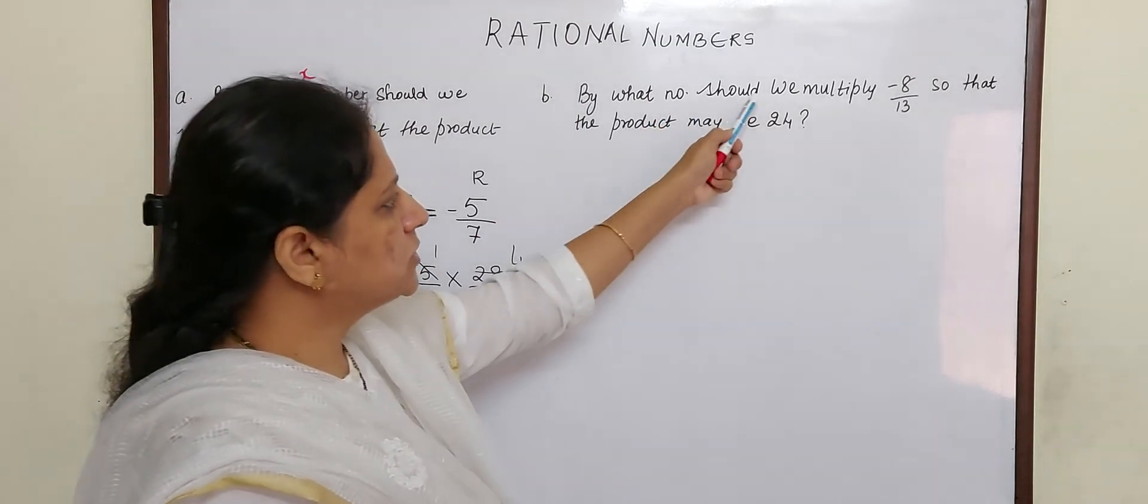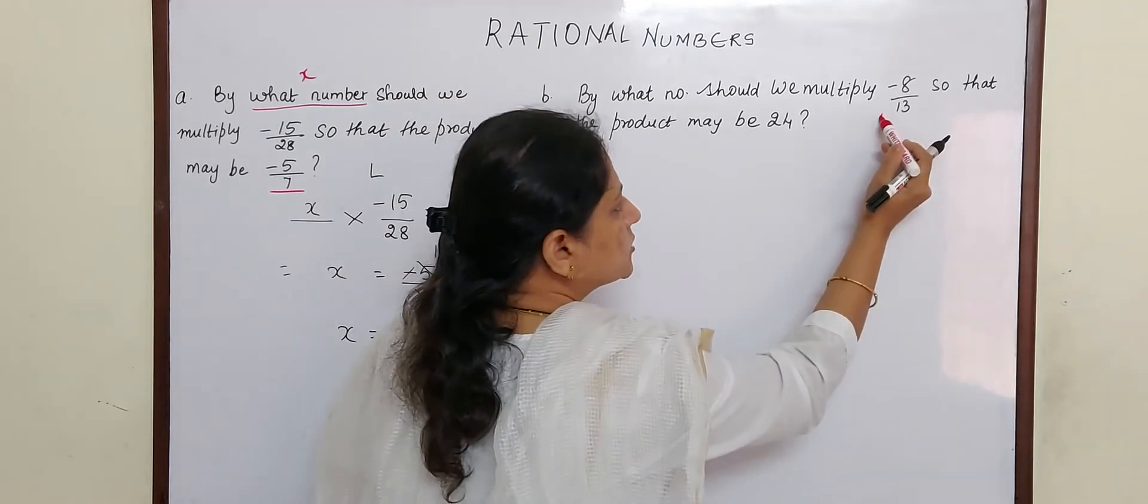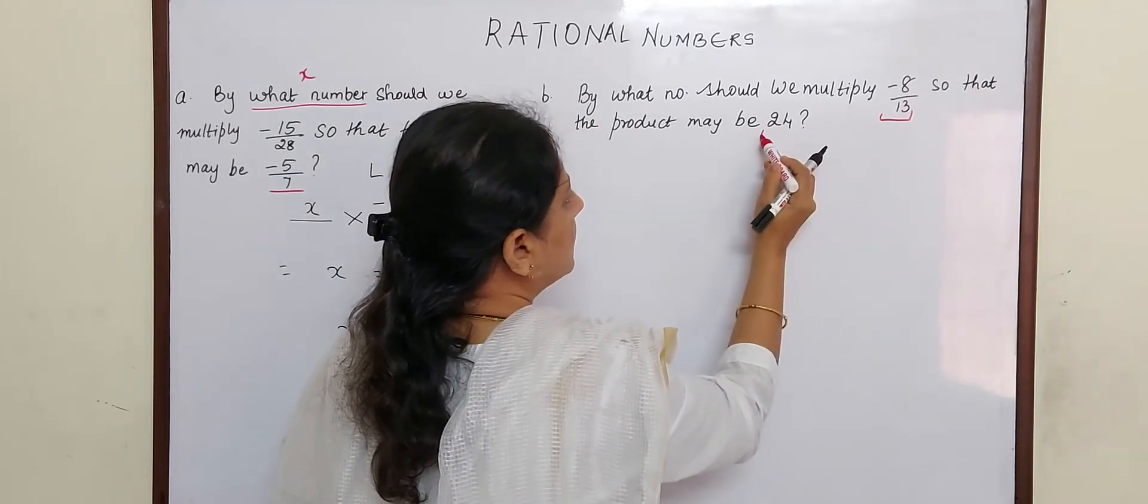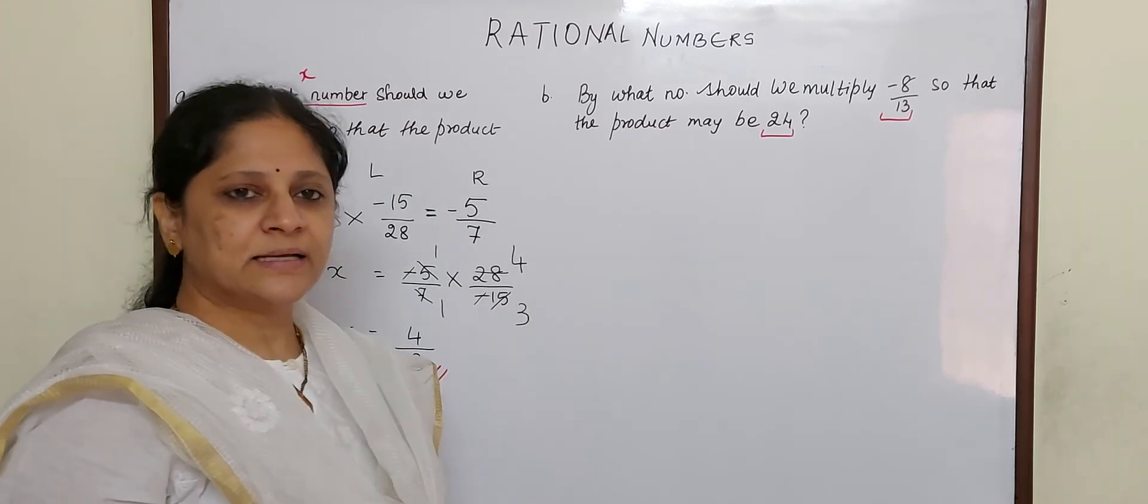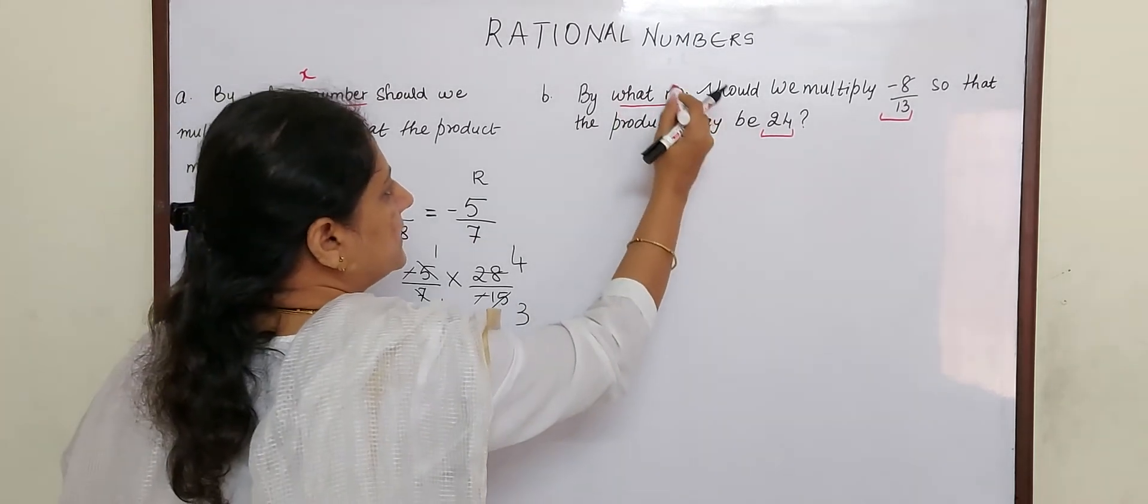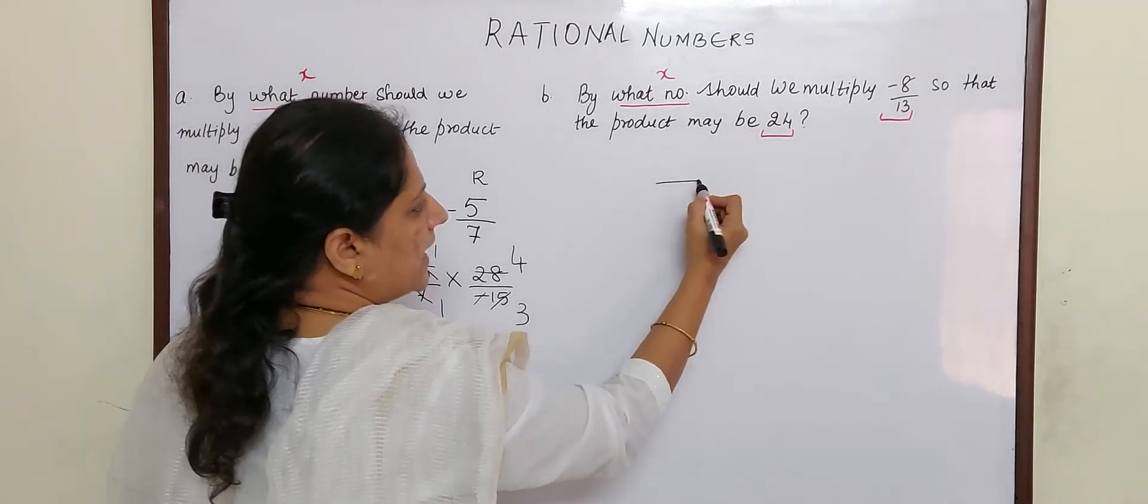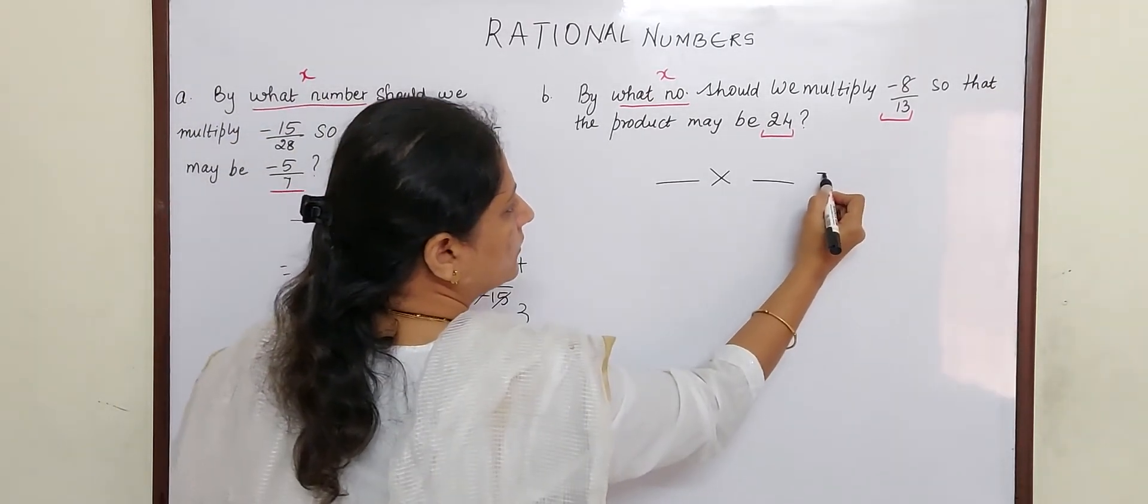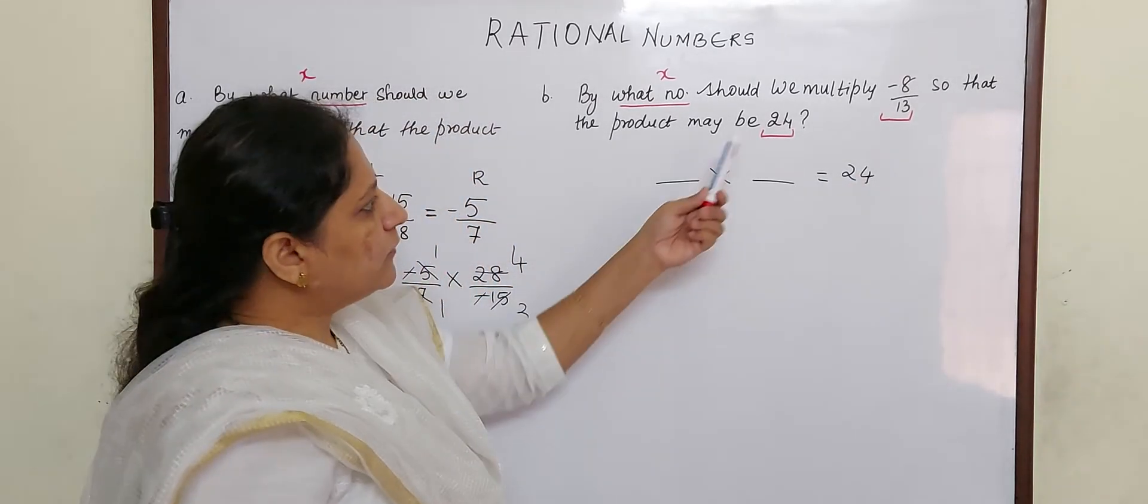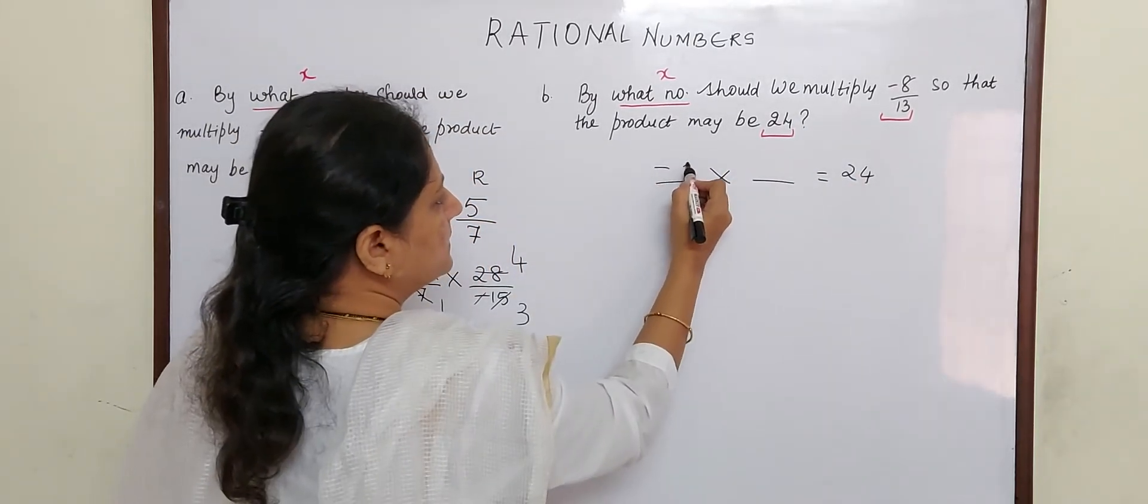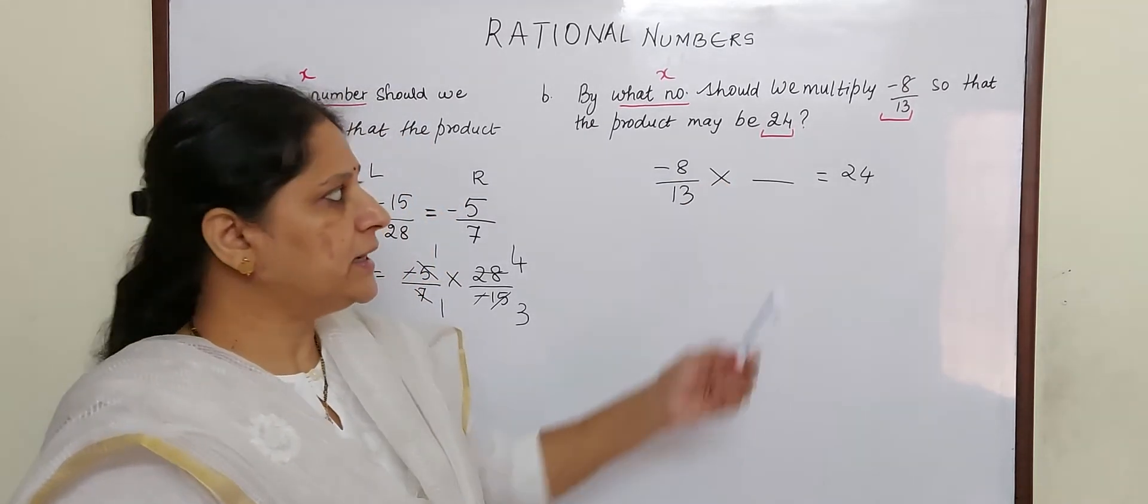By what number should we multiply -8/13 so that the product may be 24? So what will we take the number as? Yes, we will take that number as x. So what will we write? Into is equal to 24, because the product is 24, and one is -8/13 and the other is we have assumed to be x.